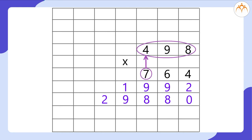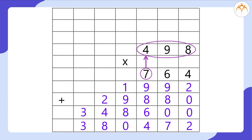Now we multiply 498 by 700. Before we multiply 498 by 700, we write two 0s — first at the units place and second at the tens place. These two 0s are because we are multiplying by 700. Then we simply multiply 498 by 7. We get the answer as 3,48,600. Then we add these three answers to get the final answer as 3,80,472.